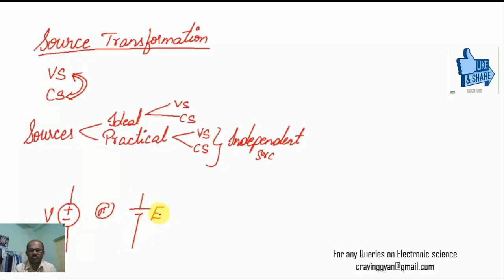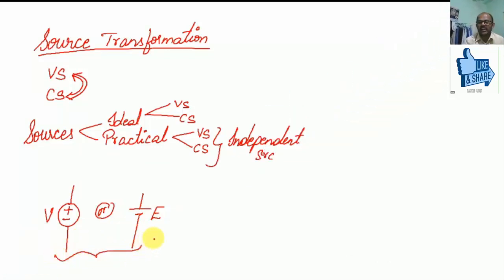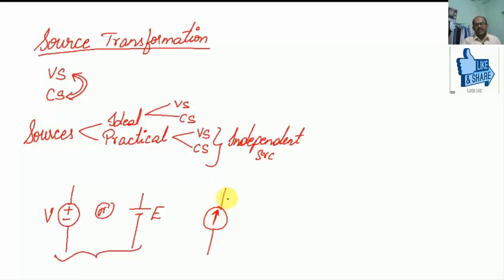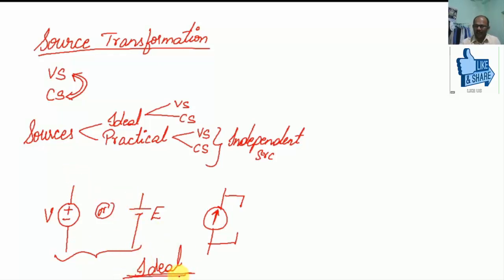An ideal voltage source is something like a battery — it has an EMF of E or potential of V, and in this case resistance is approximately equal to zero. In the case of an ideal current source, you have a current source in parallel with an impedance of infinite ohms. This is the ideal scenario.